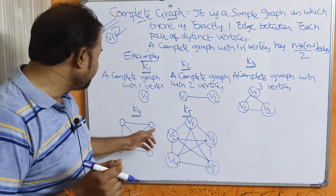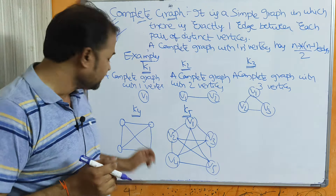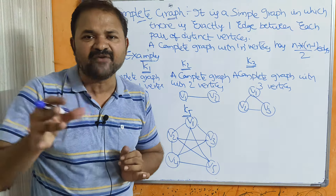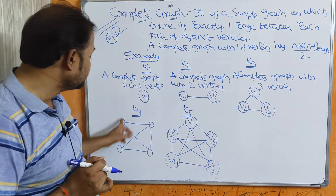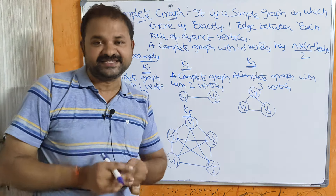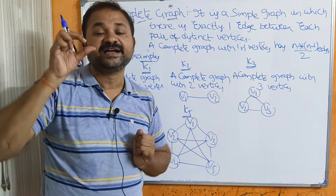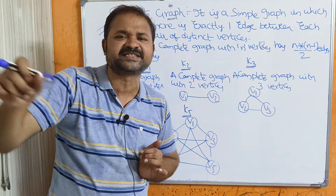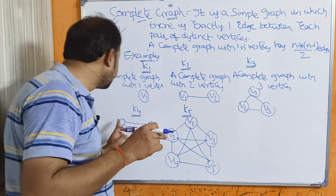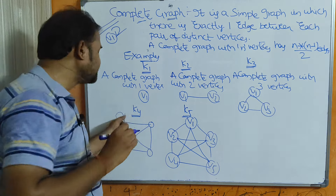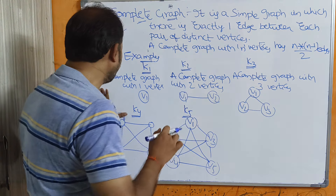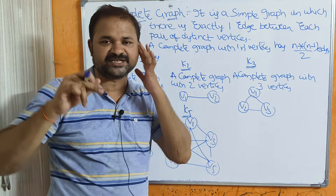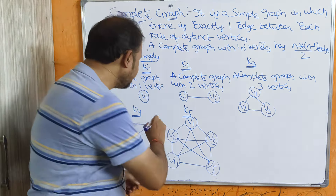So for a graph with 4 vertices, from vertex 1 we should have edges to the remaining 3 vertices, and from vertex 2 we should have edges to the remaining 3 vertices. Distinct vertices means different vertices, so self-loops from a vertex to itself are not allowed.